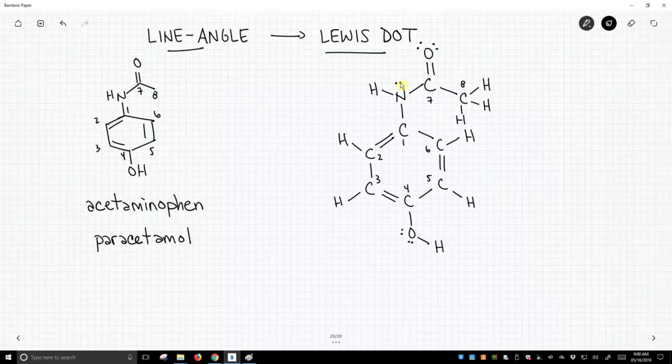So, as we go from our line-angle structure and we go over to our Lewis dot structure, the Lewis dot structure is the level of detail that we need to have in our minds.